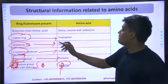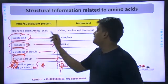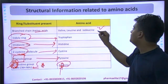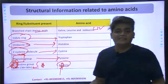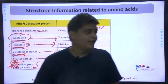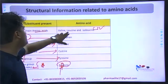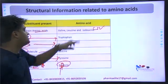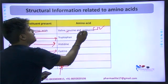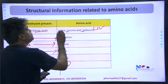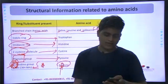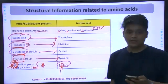This whole section is very important. Branched-chain amino acids: LIV — L for Leucine, I for Isoleucine, V for Valine. I hope things are clear till here.